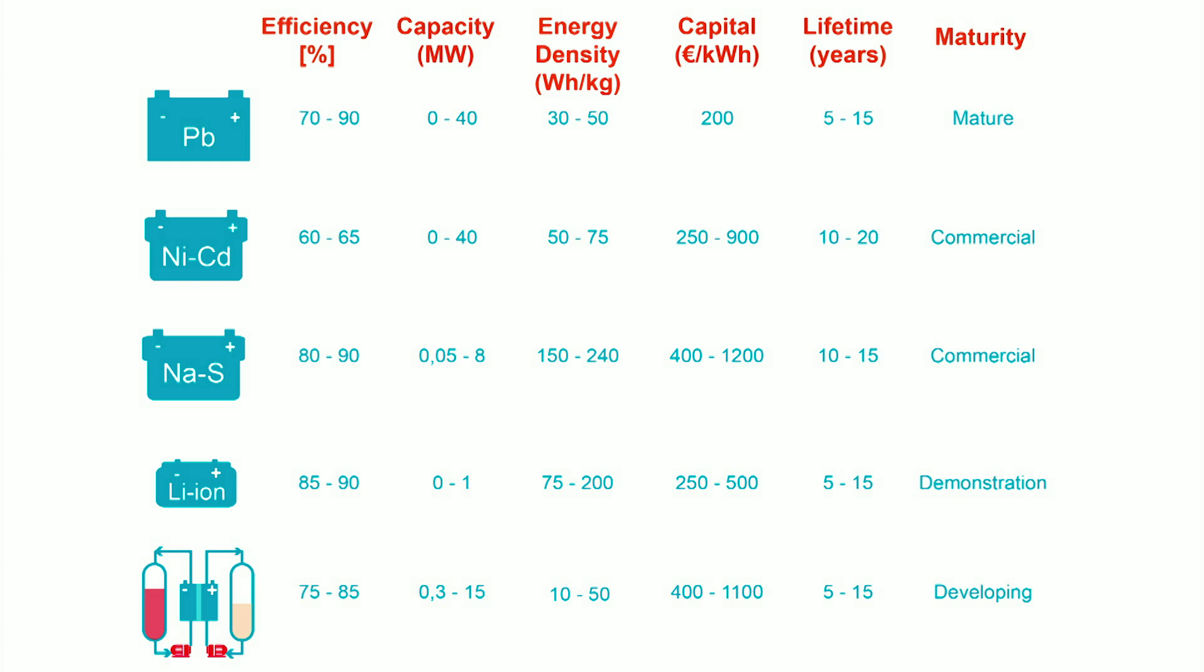Nickel cadmium and lead acid batteries have the lowest efficiency, while lithium ion and sodium sulfur batteries have high round-trip electrical efficiency up to 90%.